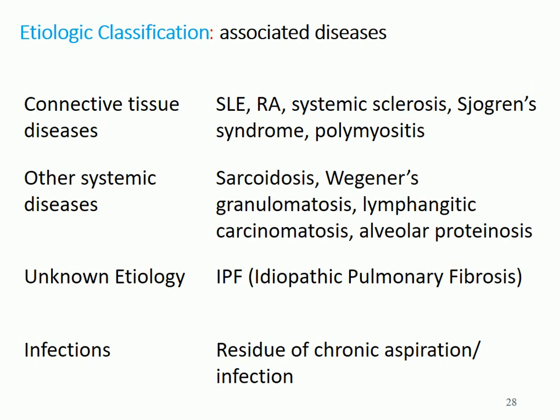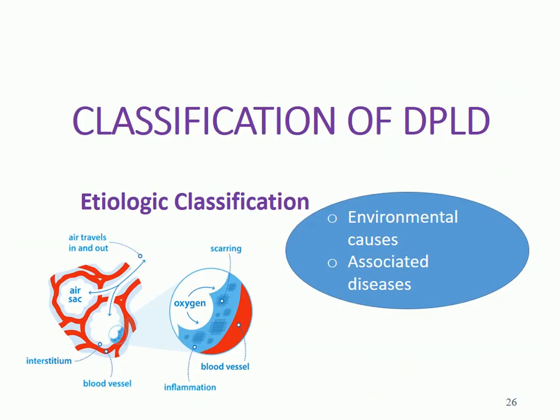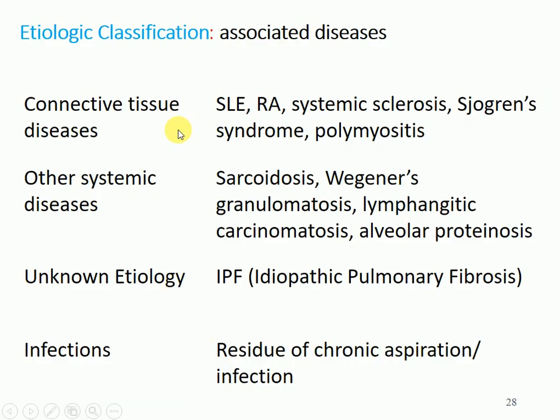Now we discuss associated diseases — where an underlying disease causes damage to the interstitial lining of the air sacs, leading to scarring and interstitial lung disease. Starting with connective tissue diseases: once someone has a connective tissue disease, it can also affect the lung interstitium. Examples include systemic lupus erythematosus, rheumatoid arthritis, systemic sclerosis, Sjögren's syndrome, and polymyositis. These connective tissue diseases are likely to be associated with diffuse parenchymal lung disease.